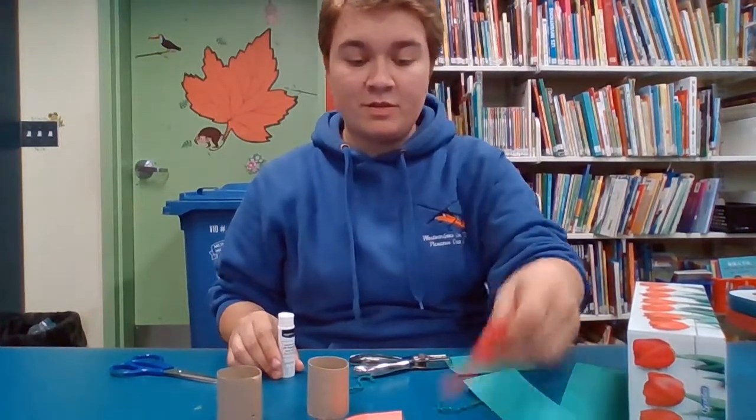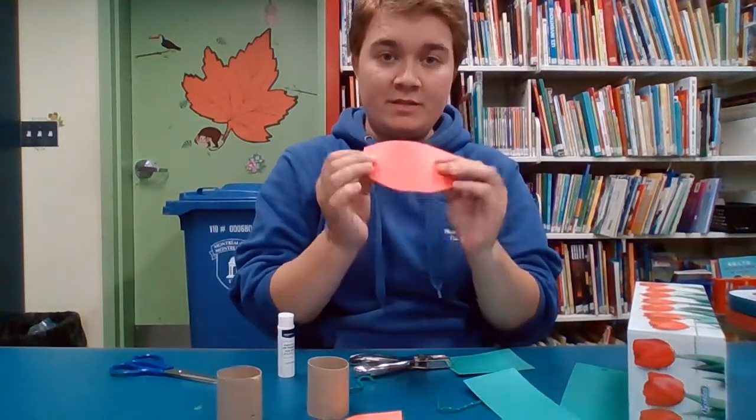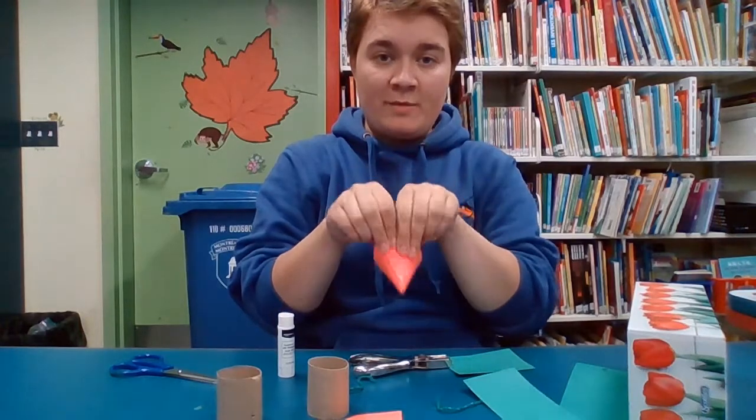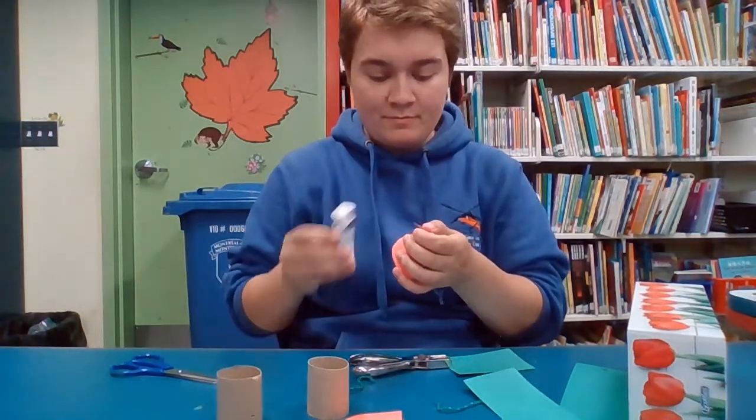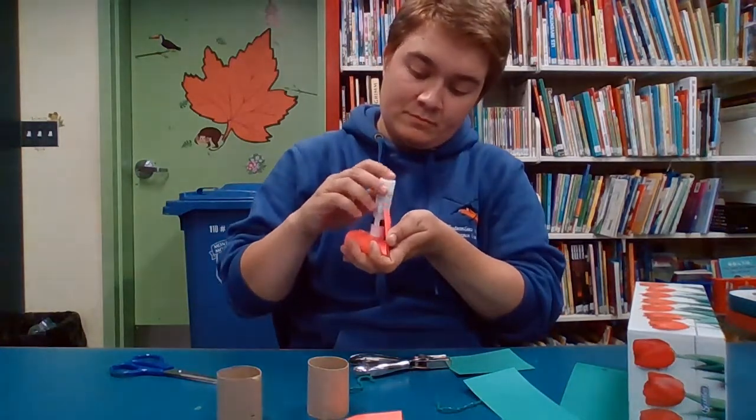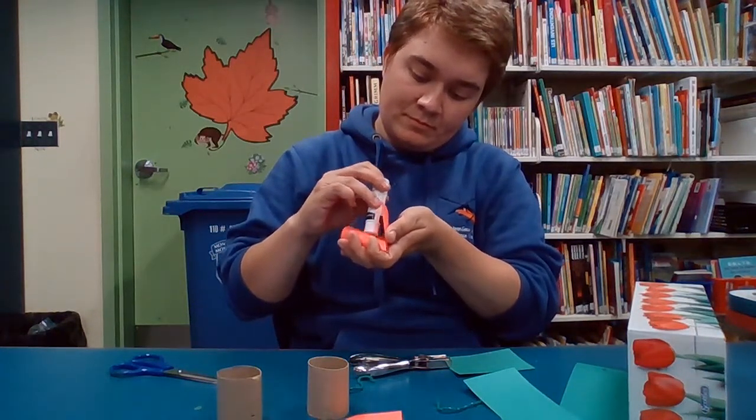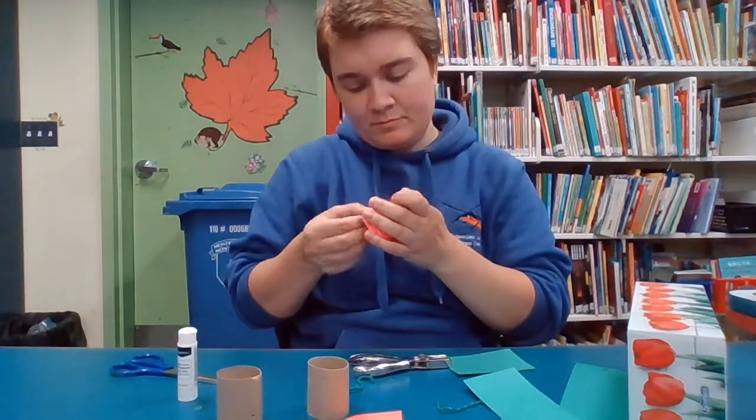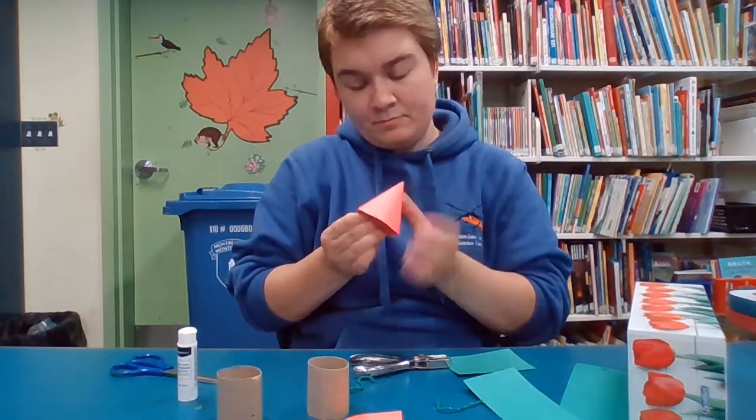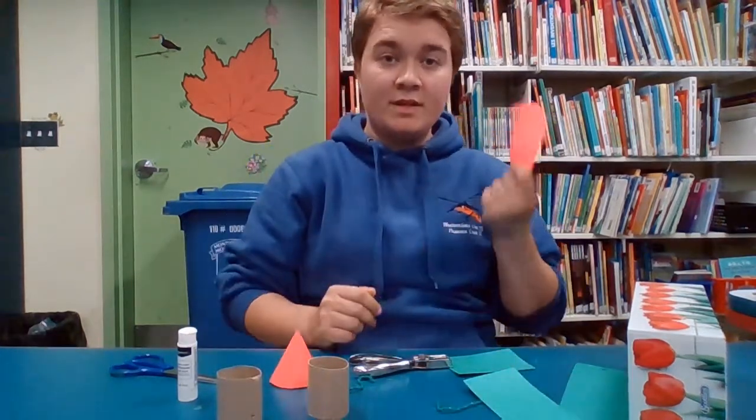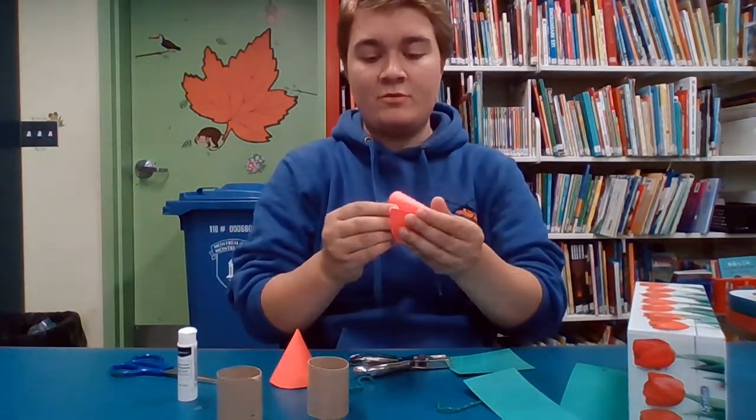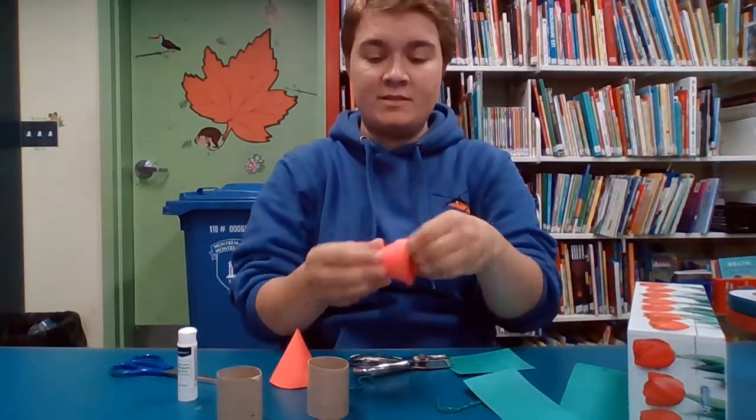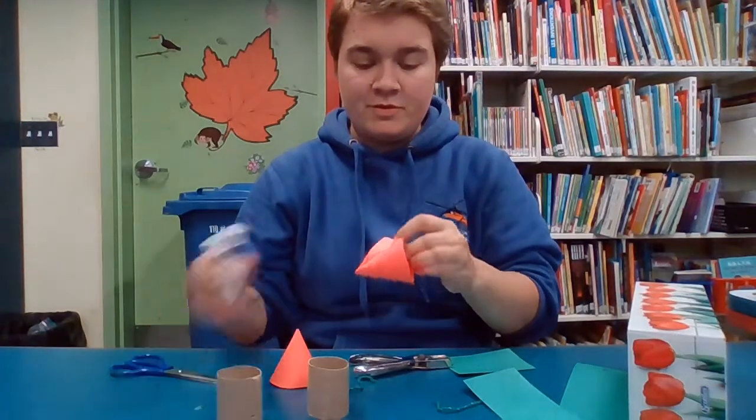Next we can make the turrets, so you can take the half circle and wrap it on itself like a little cone. And you do the same thing with the other cone. You overlap it like this and put some glue to stick it together.